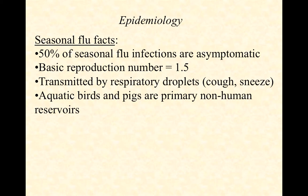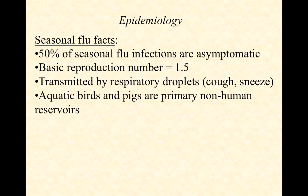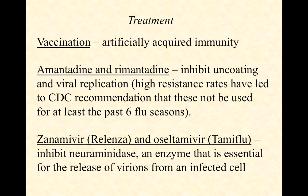Influenza is transmitted primarily by respiratory droplets through coughing and sneezing, inhaled through the nose. It can also be picked up via fomites — inanimate surfaces where a microbe can survive for a while. For example, if your roommate sneezes on her hand then opens a door, and you grab the handle and rub your nose, you could become infected. Aquatic birds and pigs are the primary non-human reservoirs.